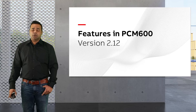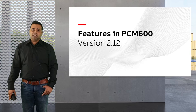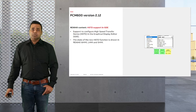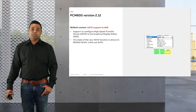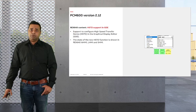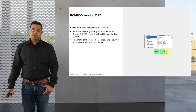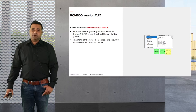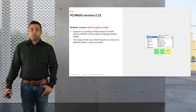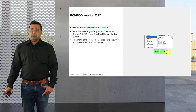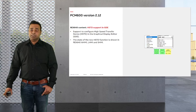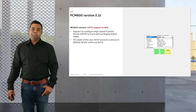Let's now recap certain important functionalities introduced with the previous version, PCM 600 2.12. The high speed transfer functionality was introduced with the recent PCL update on REX640, available via application packages or apps 51, 52, and 53. Support to configure the high speed transfer device (HSTD) is provided in the graphical display editor, and the state of the new HSTD function is shown on the REX640 WebHMI, LHMI, or SHMI. More technical details are available in the REX640 manuals.